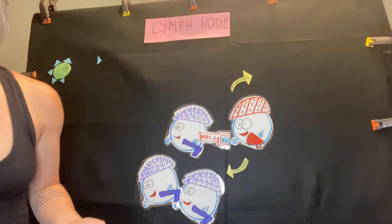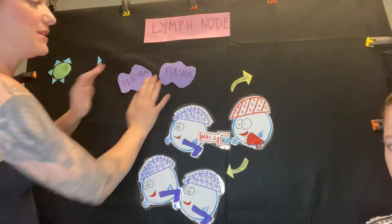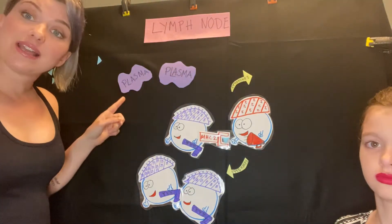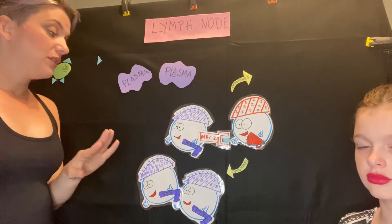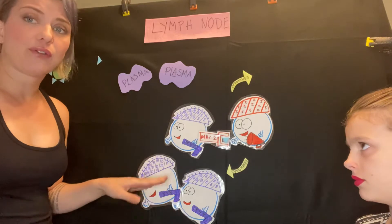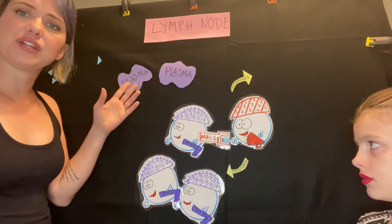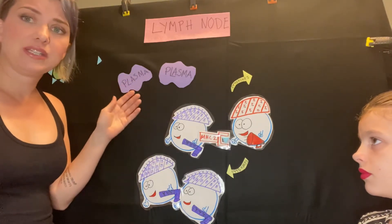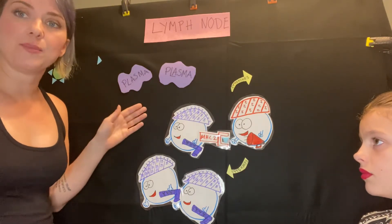In addition, the B cell will also clonally expand into plasma cells. These plasma cells are antibody-secreting cells. The memory cells are long-lived — they can stay there for the rest of your life. The plasma cells don't last as long. The job of the plasma cell is to be secreting thousands and thousands of antibodies per minute.